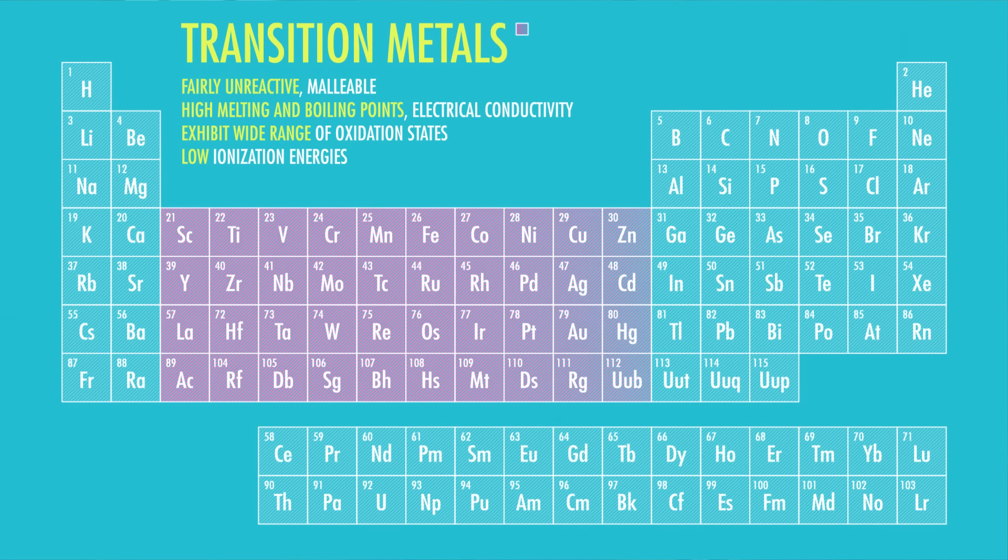The middle body area of the table is made up of a nice solid rectangle of transition metals. These are the metals you think of as metals with iron and nickel and gold and platinum. The majority of elements are metals. They're fairly unreactive, great conductors of heat, but more importantly for us, good conductors of electricity.